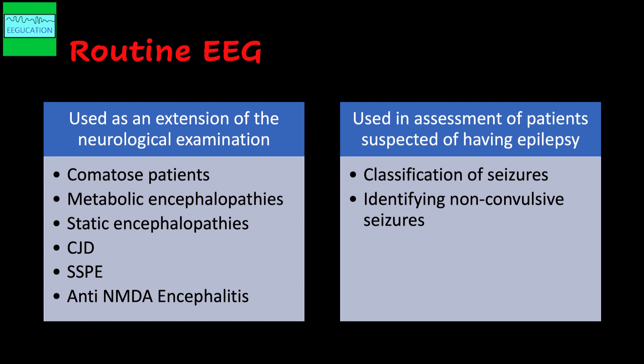Routine EEG is any EEG that you do on the spot — a patient does not have to be prepped, and a person does not have to be sleep deprived. It differs from ambulatory EEG in that most routine EEGs are done for 20 minutes to half an hour, sometimes extending to one hour. I use routine EEGs as an extension of the neurological examination — we get consulted in intensive care units and on hospital wards for patients who are comatose or suspected of having metabolic encephalopathy. It provides an additional piece of information that can help with diagnosis and management.